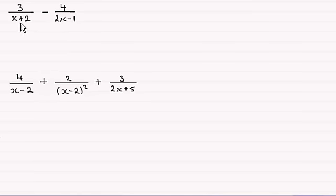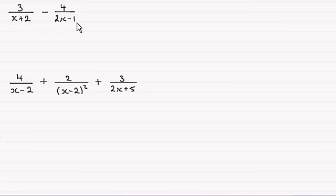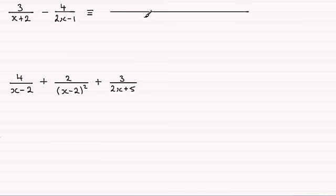If we had, say for instance, this problem here: 3 divided by (x + 2) minus 4 divided by (2x - 1), and we're asked to simplify this, we'd first of all need to select a lowest common multiple, which would be (x + 2) times (2x - 1). And we would write this as being identical to, with our lowest common multiple in the denominator: (x + 2) multiplied with (2x - 1).